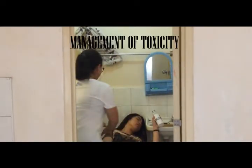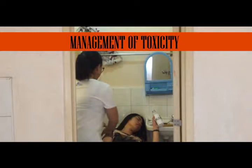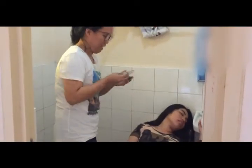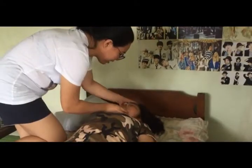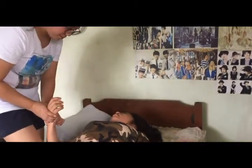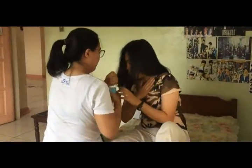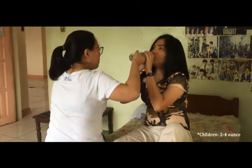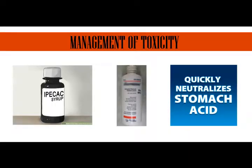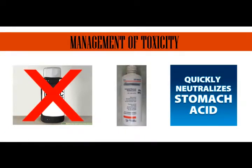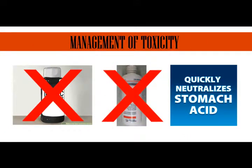If you suspect muriatic acid intoxication, the first thing to do is bring the victim to a safer area and call 911 if necessary. Secure airway, breathing, and circulation — the ABCs. If the victim is conscious, let them drink four to eight glasses of milk or water. Do not induce emesis, do not administer activated charcoal, and do not attempt to neutralize stomach contents.